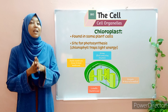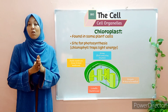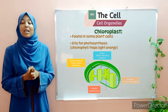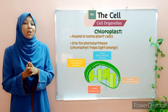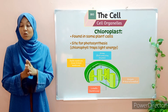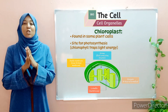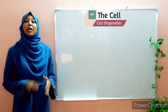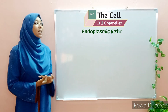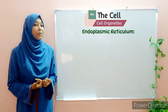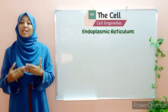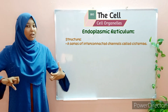I will not go into detail regarding the structure of the chloroplast, as I have explained it in detail in another video called 'The Process of Photosynthesis,' so be sure to check it out. Moving on to our next organelle — the endoplasmic reticulum. The endoplasmic reticulum consists of a series of interconnected channels, meaning channels that are linked or connected to one another, and these channels form cisternae.